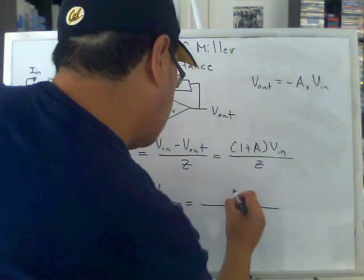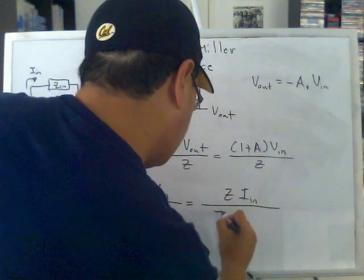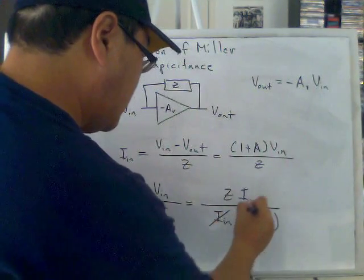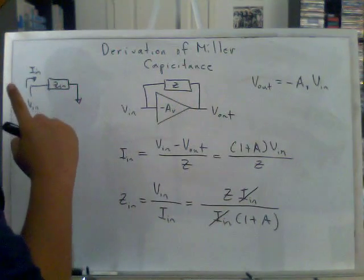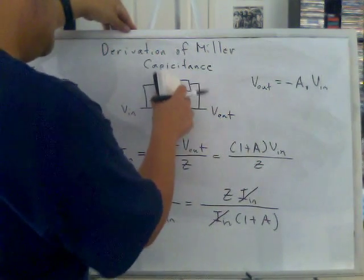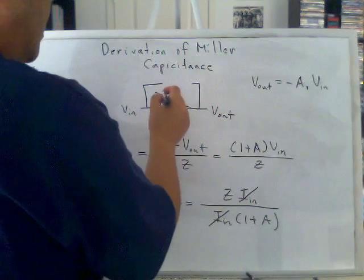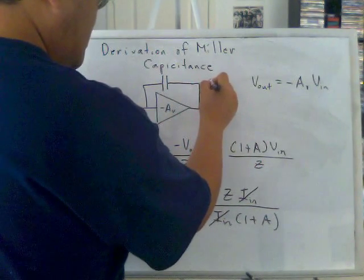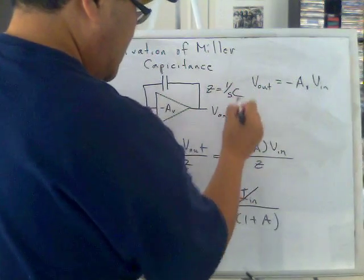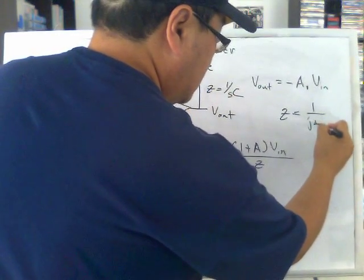We already know the input impedance—it's actually Z over 1 plus A. If we substitute this feedback loop impedance, this generalized impedance with a capacitor, we know the impedance of this capacitor is 1 over SC, or you can say Z equals 1 over j omega C. These two are correct, but I use the Laplacian form.